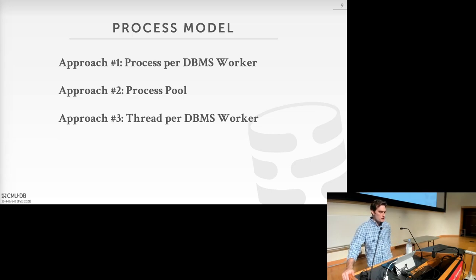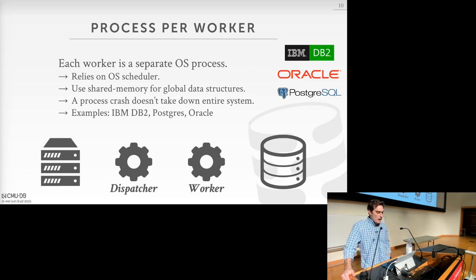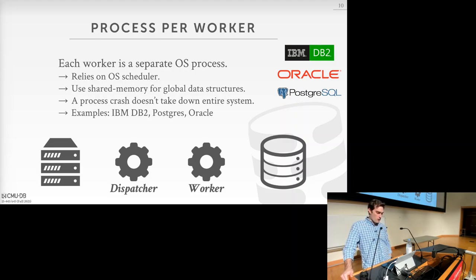There are three approaches. The first is one process per DBMS worker — each worker is a separate OS process. We rely on the OS scheduler and use shared memory for global data structures and inter-process communication. The nice thing about this model is that if a process crashes, it's not going to break the entire system — one worker process crashing won't affect the rest.